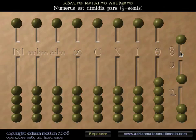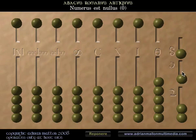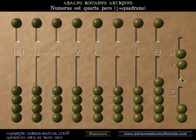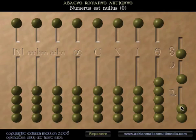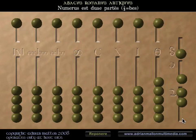Die middia pars, a half. Quarta pars, a quarter. Quarta pars et die middia pars facet tres partes. A quarter and a half makes three quarters. Tertia pars, a third. Duae partes, two thirds.